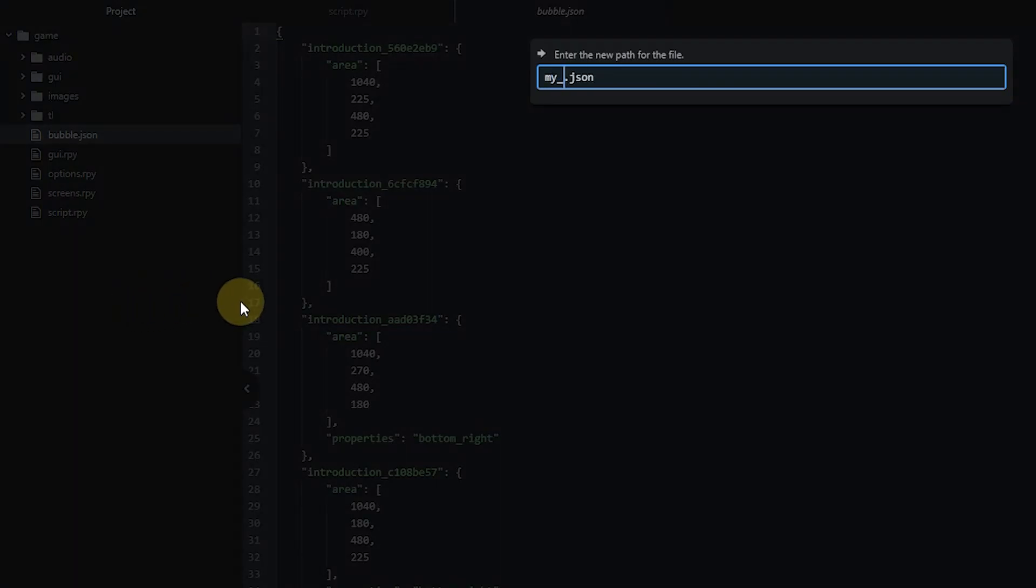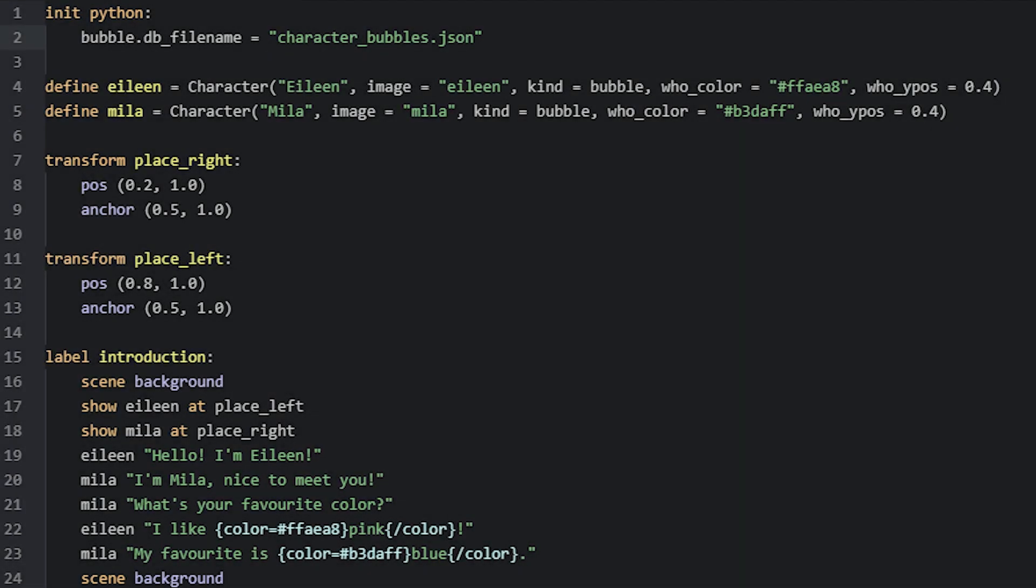If you try this, you'll find that Ren'Py can't seem to find the bubble file anymore, which results in the placement of the bubbles in the game being lost. Instead, you need to use a configuration variable called bubble.db_filename that should be set to the name you want for the file. This needs to be done before the file has been generated.